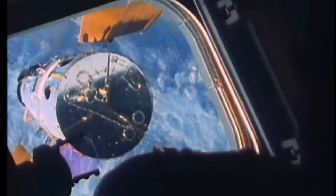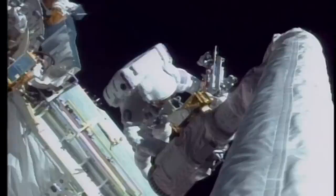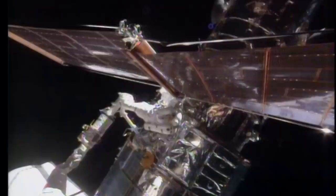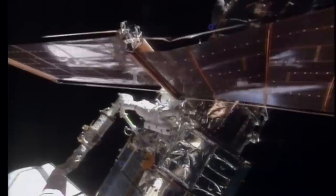Hubble est ramené dans la baie de chargement. La première tâche est de remplacer les panneaux solaires, source d'énergie du télescope. Ils provoquaient une vibration. Un des panneaux est démonté pour être ramené sur Terre. L'autre, refusant de se replier, est tout simplement largué dans l'espace.